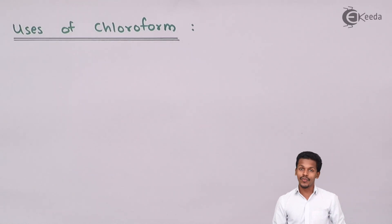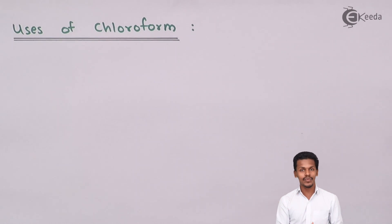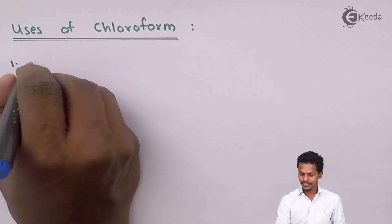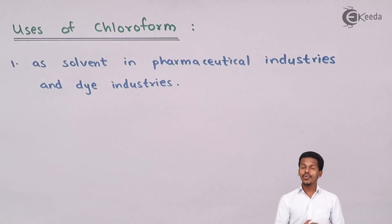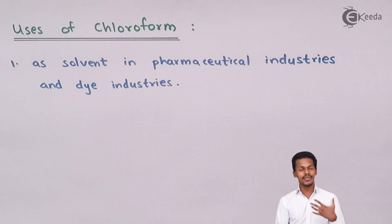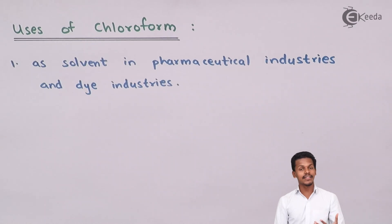Talking about the uses of chloroform: chloroform was used as an anesthetic in previous generations, but nowadays it is no longer used for that purpose. Chloroform is used as a solvent in pharmaceutical industries as well as other industries. Since these are organic components and mostly polar in nature, most organic components can be easily dissolved in chloroform when it acts as a solvent.